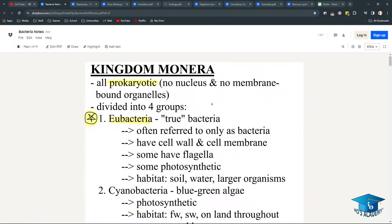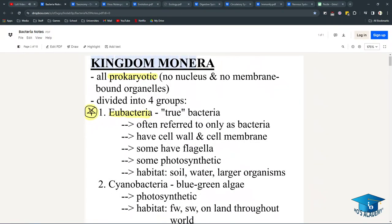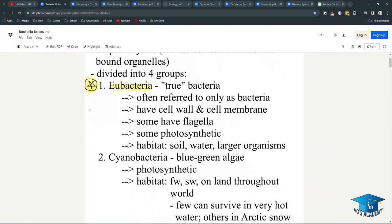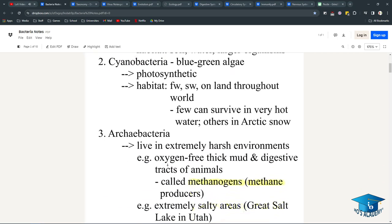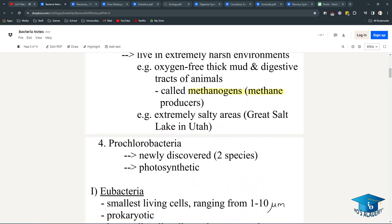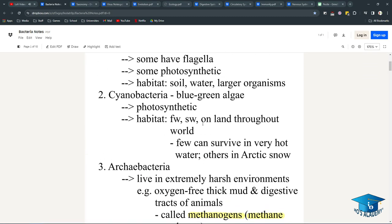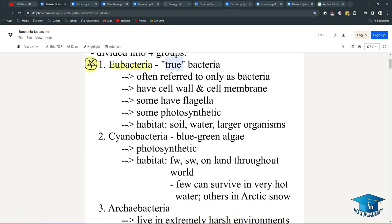Alright, time for bacteria. Kingdom Monera are all prokaryotic, which means they have no nucleus, no membrane-bound organelles, and they divide into four subgroups: Eubacteria, Cyanobacteria, Archaebacteria, and Prochlorobacteria.